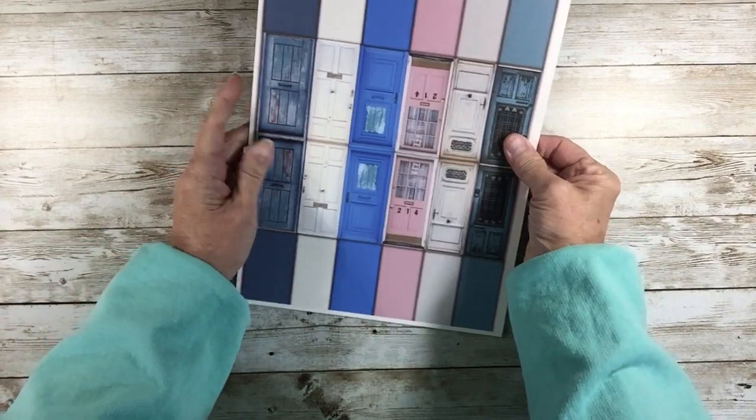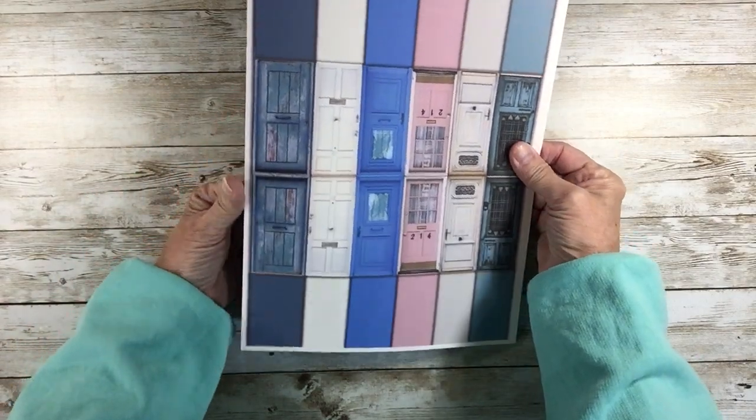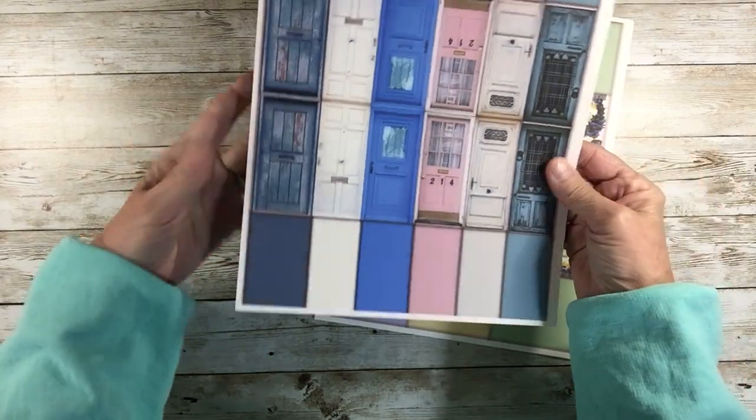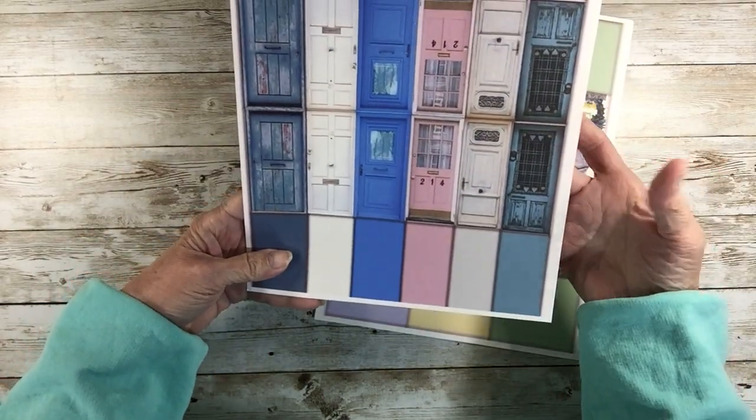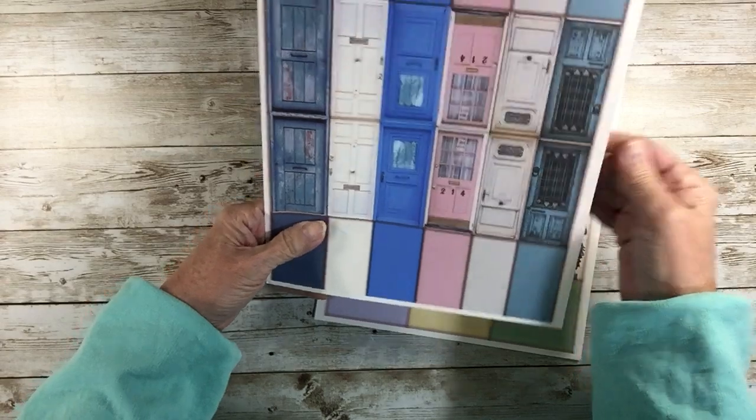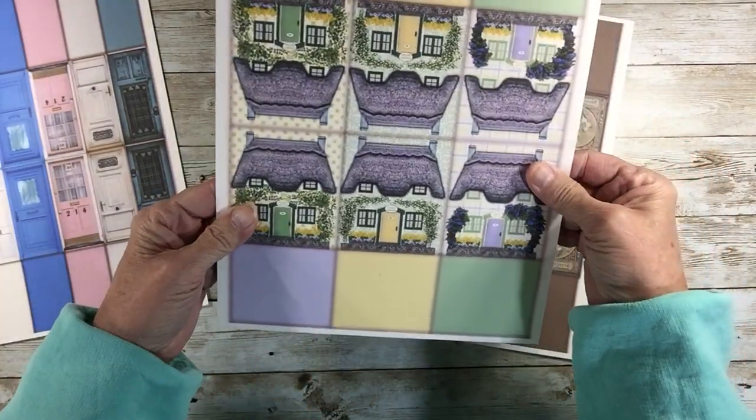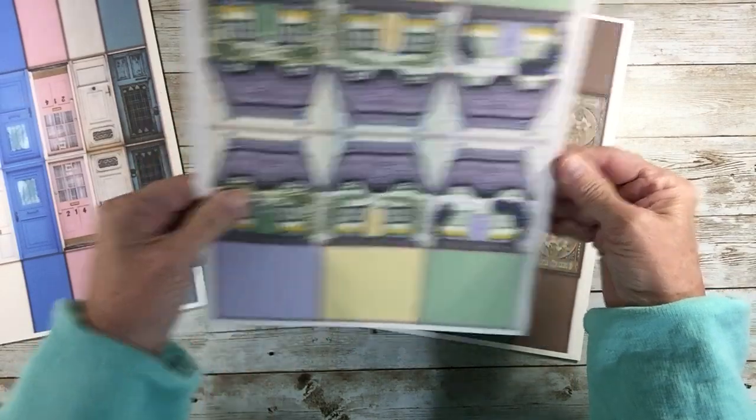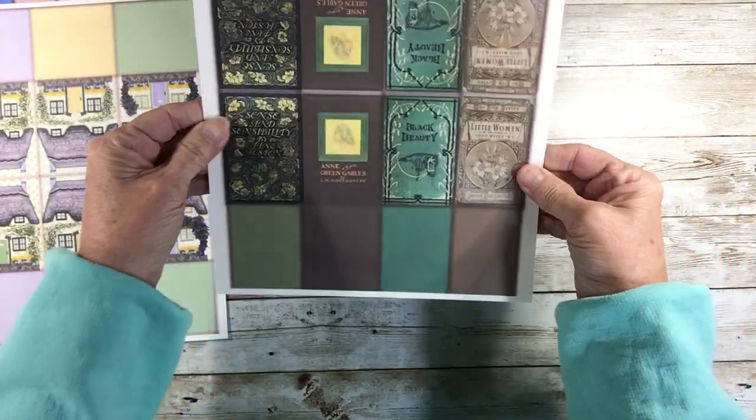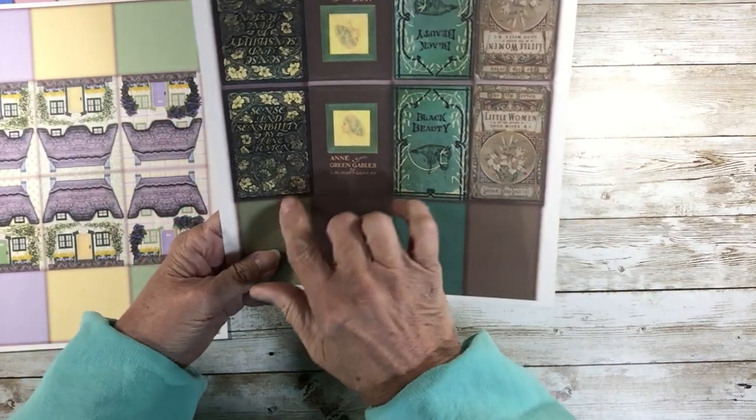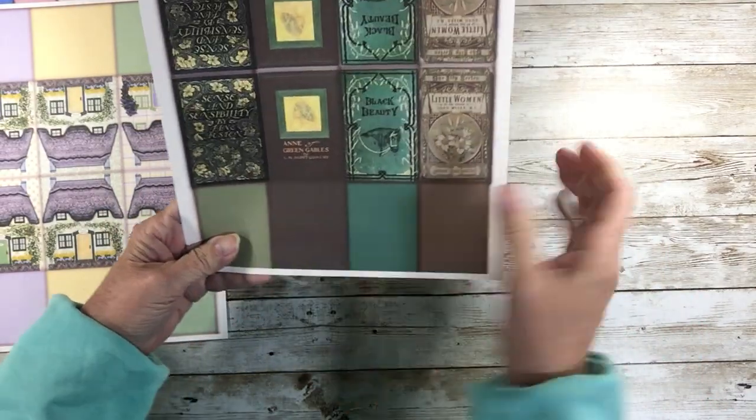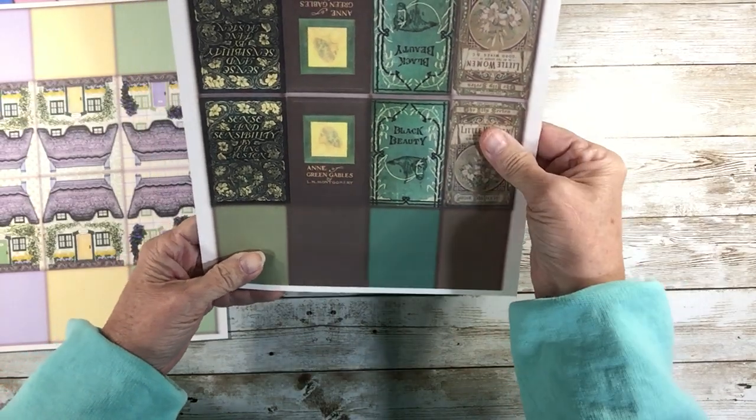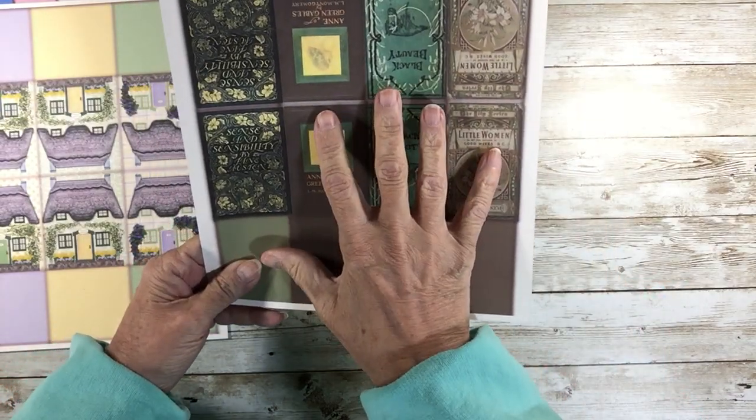I'm gonna take you from the get-go. So we have three kits. This is, I'm calling this the multi-colored doors. This is our John Quill Cottage and they're a little bit bigger. And then this is the freebie and it's some classic books: Sense and Sensibility, Anne of Green Gables, Black Beauty, and Little Women. This is gonna be the freebie.